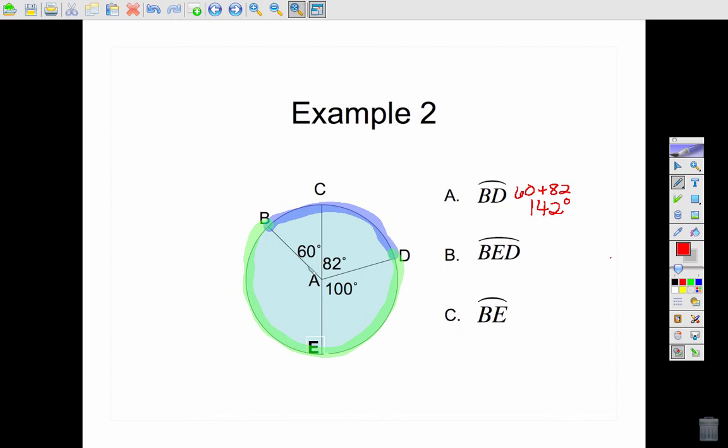And I need to know what this angle is right here. If this whole thing is 180, then this is 120. So I add the two together, 120 plus 100, and that's 220.